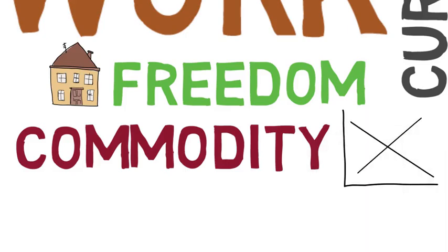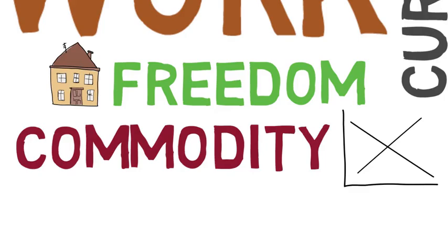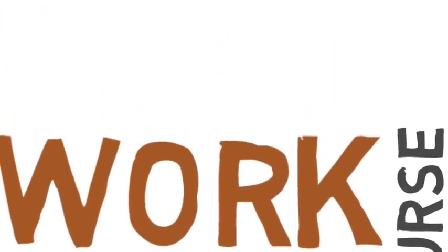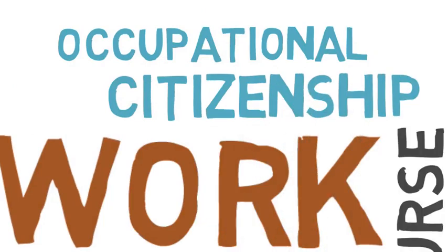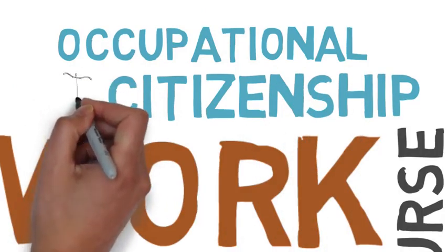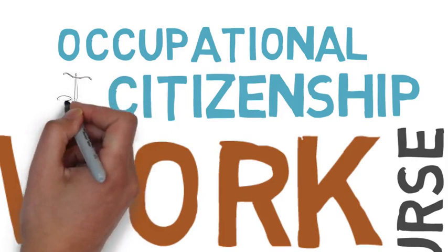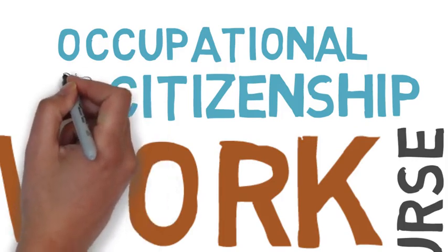In contrast with this, a fourth way of thinking about work as occupational citizenship is to see work as something pursued by human members of a community and therefore entitled to certain rights beyond what a market might provide.